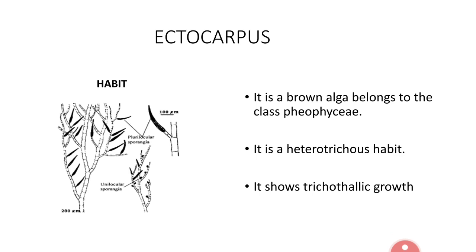Habitat or occurrence: Ectocarpus species generally grows in marine waters, especially on shore regions or on rocks. The species which grows on rocks is called a lithophyte. Some species of Ectocarpus are epiphytes, which means they grow on other algal members. Ectocarpus coniferus and Ectocarpus breviarticulatus are good examples of epiphytic Ectocarpus species. Another species, Ectocarpus fasciculatus, is an epiphytic species that grows on the fins of fishes.